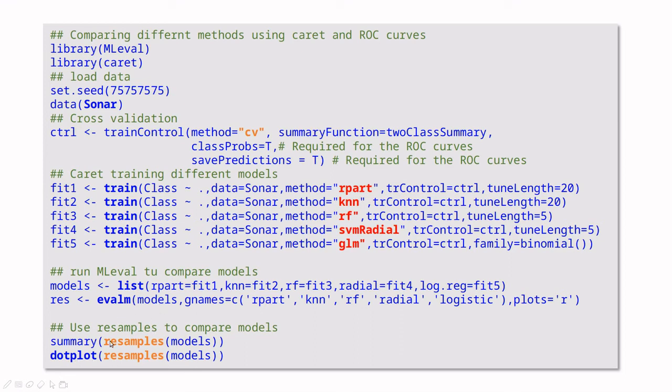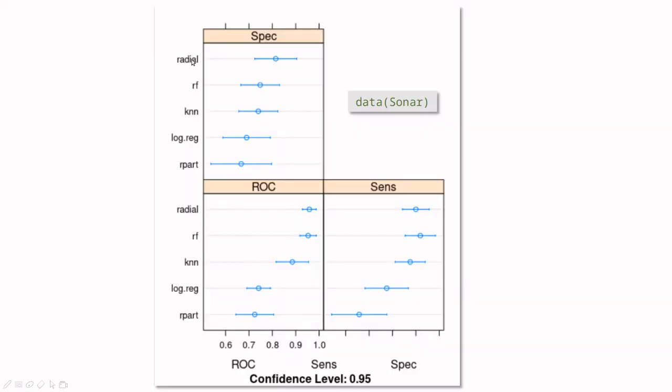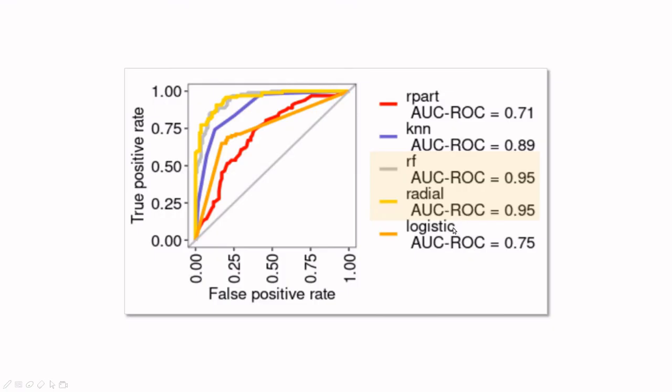So do we have any other criterion? You can use resamples from the caret library and you can plot it with dot plot. And as you can see here, radial SVM and random forest are the best. They have the highest specificity, the highest sensitivity, and also the highest area under the curve. So you have a couple of ways in which you can plot this. I like this one because you have different metrics. I have this one because you can have a good visual grasp of what's going on here.